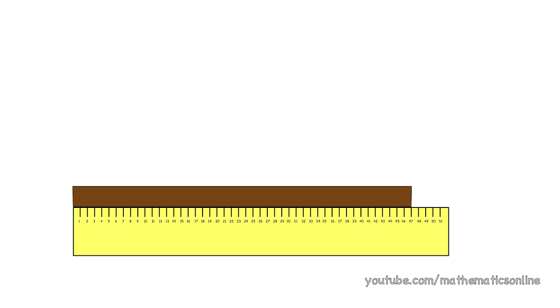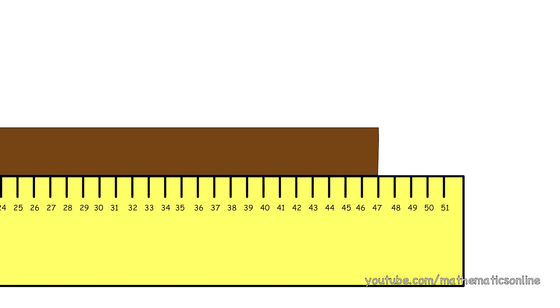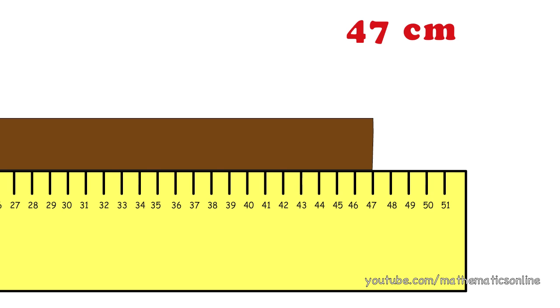Suppose we have a ruler that measures in centimeters. Here we see that the block of wood is 47 centimeters, therefore we have two significant figures.